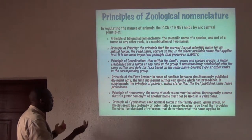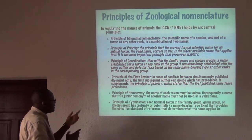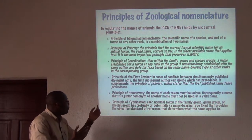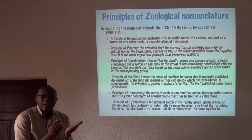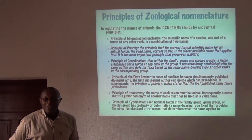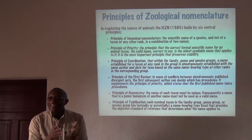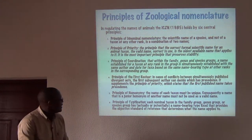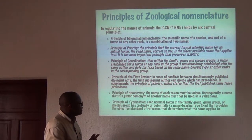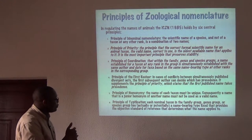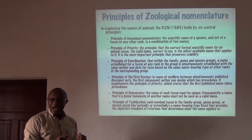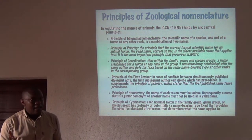The principle of homonymy states that the name of each taxon must be unique. Consequently, a name that is a junior homonym must not be used — if there are two names, the one published later cannot be used in a formal forum. Finally, the principle of typification states that each nominal taxon in the family group, genus group, or species group has a name-bearing type fixed.